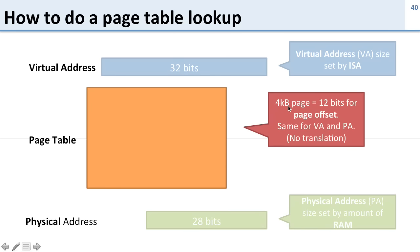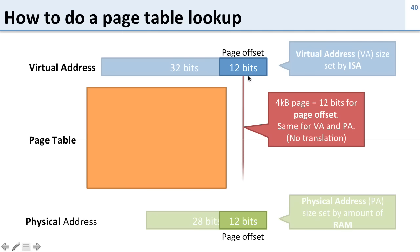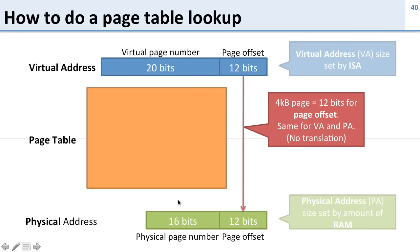The first thing to remember is we have pages that are larger. In this case we have a 4 kilobyte page, so we've got 12 bits for our page offset. That means these lower 12 bits — the page offset — are not translated; they just go straight through. That leaves us the remaining 20 bits of the virtual page number that needs to be translated into 16 bits of the physical page number.